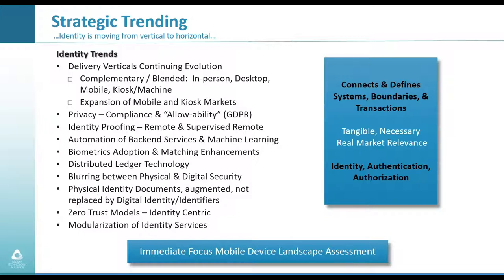We're looking at automation of the back end and machine learning. In the biometrics space, we're teaming with IBIA, and Mark's presentation is a partnership between the Alliance and IBIA. Distributed ledger technology adds more capability. The blurring between physical and digital security is growing, with physical identity documents becoming more augmented with digital capabilities. We've also discussed authentication, partnering with FIDO and other authentication strategies, zero trust models, and modularization of identity services. People want to mix and match and pay for what they see value in.